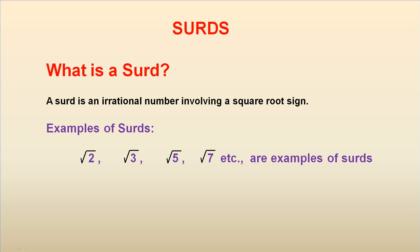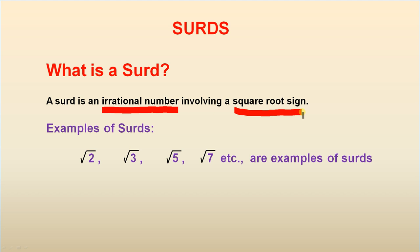CERDs. What is a CERD? A CERD is an irrational number involving a square root sign. The two important things to know are: it's an irrational number, and there's a square root sign involved.